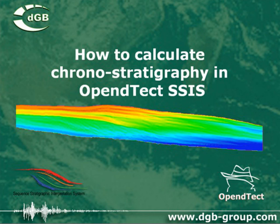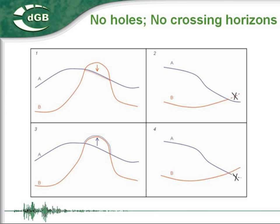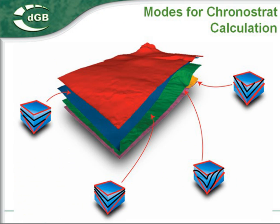First, we must map at least two horizons to define the upper and lower boundary of the target interval. Horizons should be continuous over the entire area and they cannot cross. Tools are available under the Sys Utilities menu to prepare the input horizons.